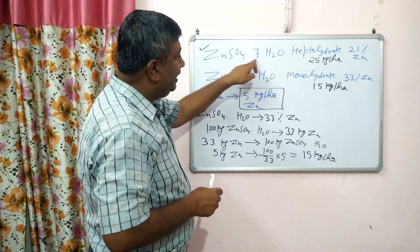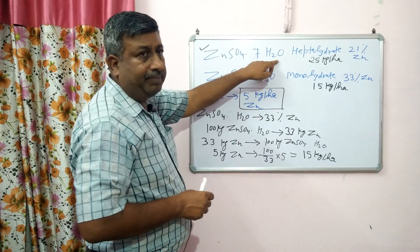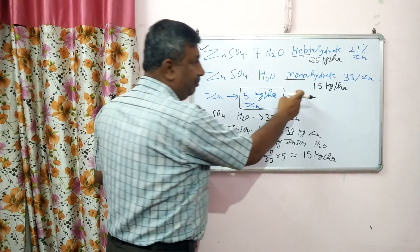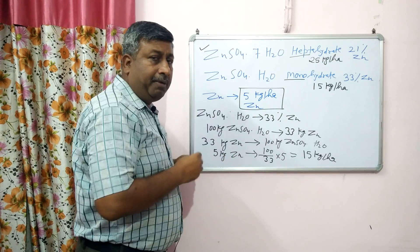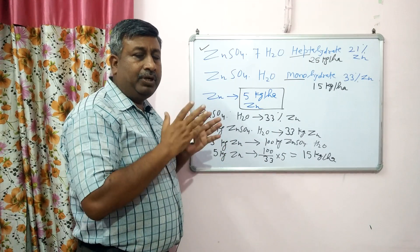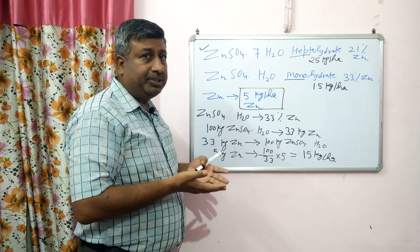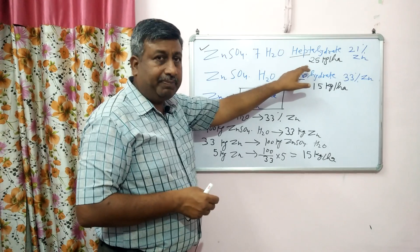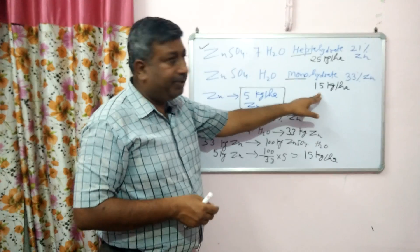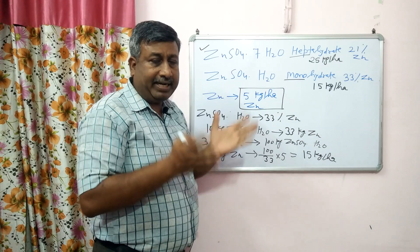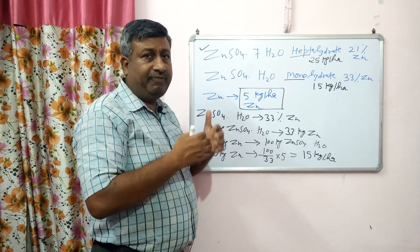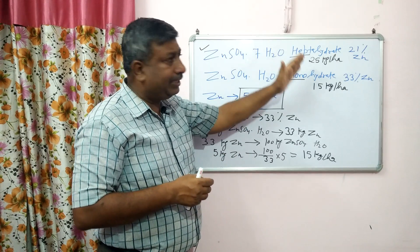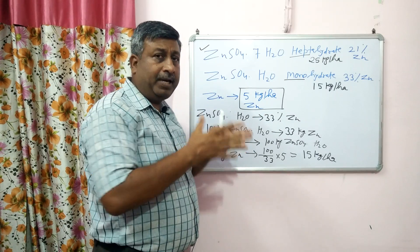Look at the water molecule count — whether it is heptahydrate or monohydrate. For monohydrate the requirement is 15 kg, and for heptahydrate it is 25 kg per hectare. This zinc sulphate is applied at the time of sowing. So there is confusion about the application rate, but it will become clear when you read what is written on the back of the packet when you purchase zinc sulphate from the market.